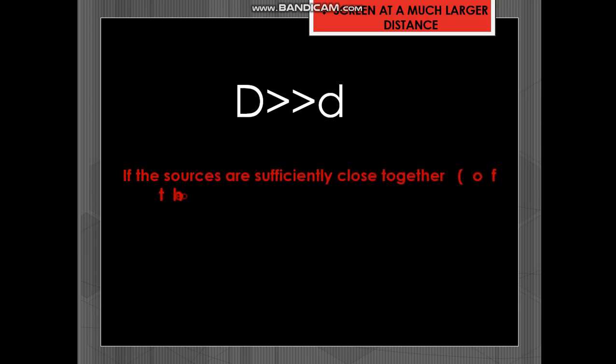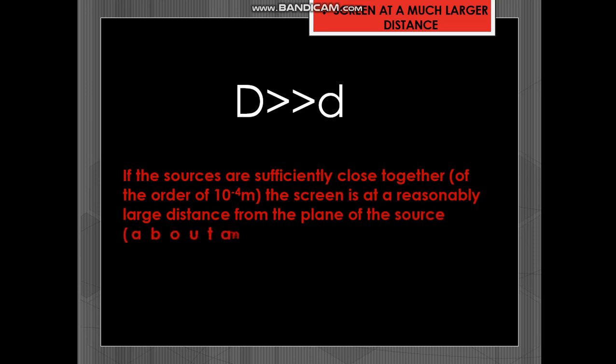The screen must be at a much larger distance. Capital D should be much greater than small d. Capital D is the distance between the screen and the source. And small d is the distance between the two sources, the virtual images in the biprism.